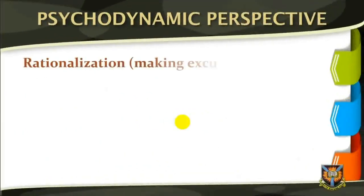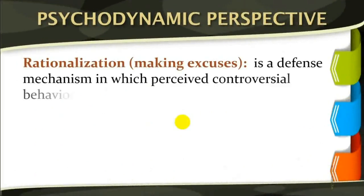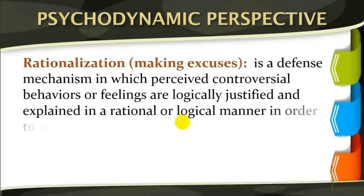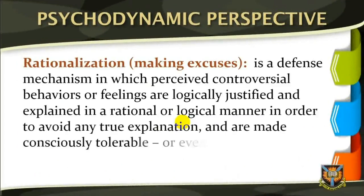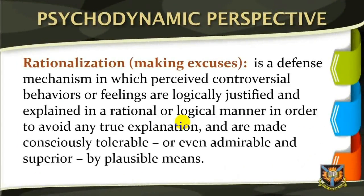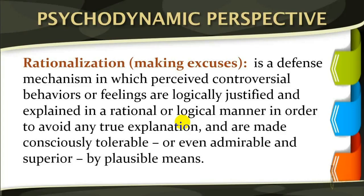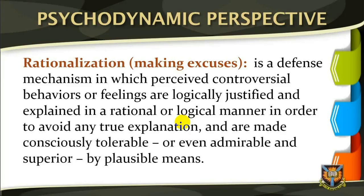Rationalization, or making excuses, is a defense mechanism in which perceived controversial behaviors or feelings are logically justified and explained in a rational or logical manner in order to avoid any true explanation, and are made consciously tolerable or even admirable and superior by plausible means. Rationalization encourages irrational or unacceptable behaviors, motives, or feelings. This process ranges from fully conscious, such as an external defense against ridicule from others, to mostly subconscious, such as to create a block against internal feelings of guilt.